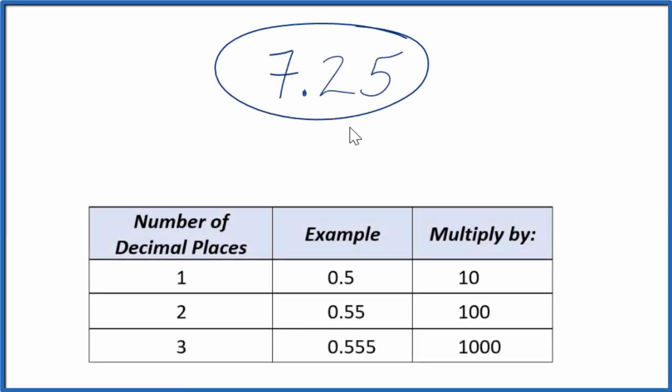Let's write the number 7.25 as a fraction, and here's how we can do that. First off, let's write 7.25 over 1, because 7.25 divided by 1 is still 7.25. We haven't changed the value. Now we have the start of a fraction.